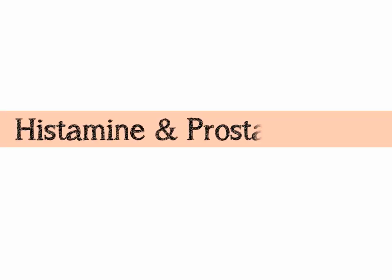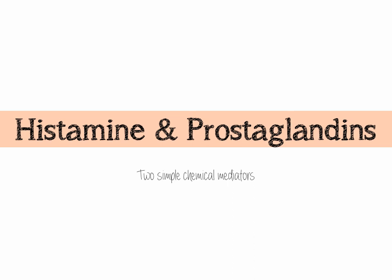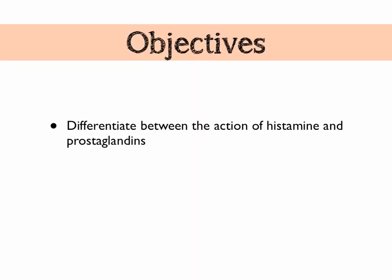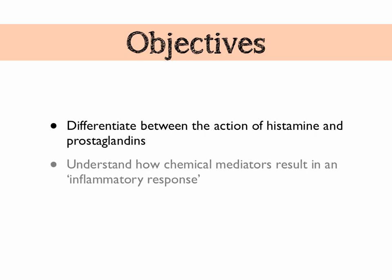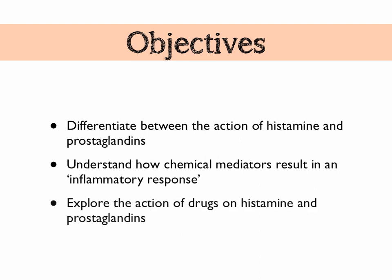In this video we're going to be looking at histamine and prostaglandins, which are two really simple chemical mediators. If you're following this in your AQA A2 textbook, that's the one by Glenn and Susan Toole, you can find this on page 156 to 157. Our objectives are to differentiate between the action of histamine and prostaglandin, understand how chemical mediators result in an inflammatory response, and explore the action of different drugs on histamine and prostaglandin levels — that last part is beyond the A2 specification, so keep that in mind if you're writing a synoptic essay.